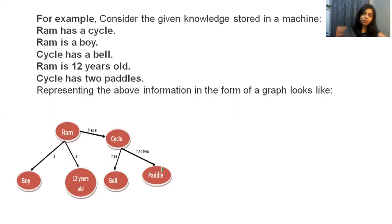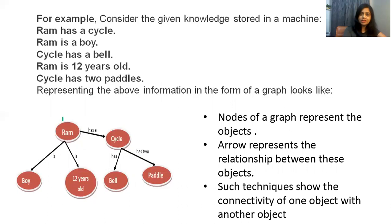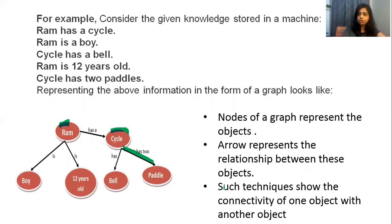In this technique, information is represented in the form of graphs. The nodes of the graph represent objects, and the arrows represent the relationships between objects. Such a technique shows the connectivity of one object with another object.